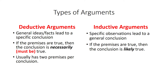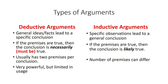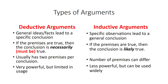A deductive argument usually has two premises per conclusion, but in an inductive argument the number of premises can differ. A deductive argument is very powerful but limited in its usage — powerful because if the premises are true, the conclusion must be true. An inductive argument is less powerful because new facts could change the conclusion, but inductive arguments are more widely used and can be applied in many different situations. That's why science is based on inductive arguments.